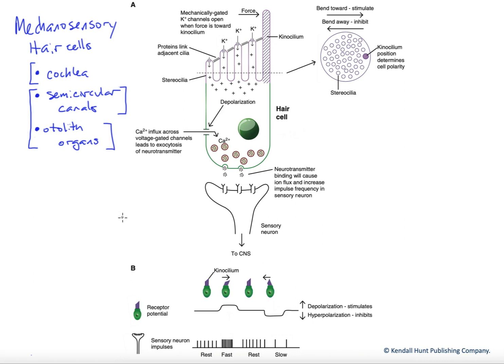These are mechanosensory cells because they're sensing physical distortion. In other words, forces are being imposed within the cochlea, the semicircular canals, or the otolith organs on specific structures which allow the hair cells to be distorted.